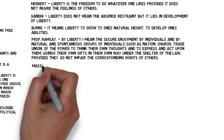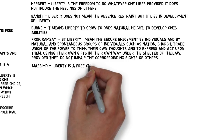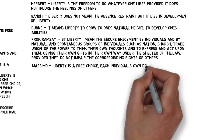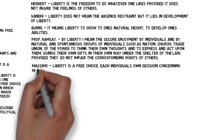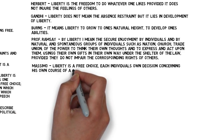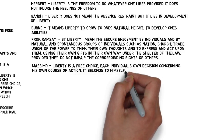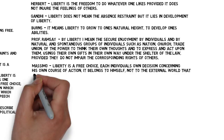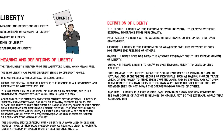And finally, according to Massimo, liberty is a free choice — each individual's own decisions concerning his own course of action. It belongs to himself, not to the external world that surrounds him. I hope you have understood the first part on liberty, which is meaning and definitions. See you soon in the next part of this tutorial, where we will talk about the development of the concept of liberty.